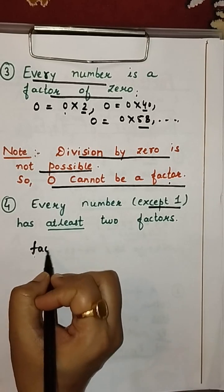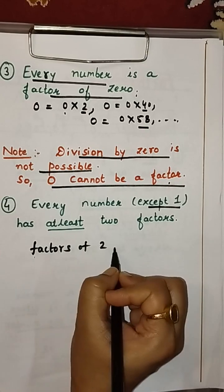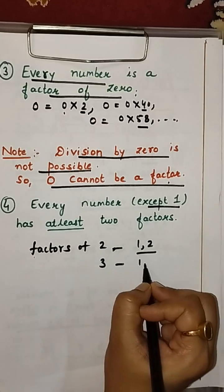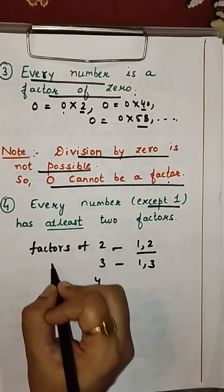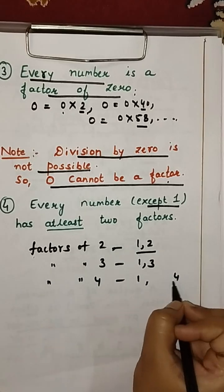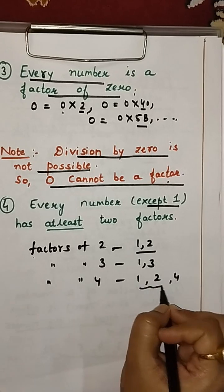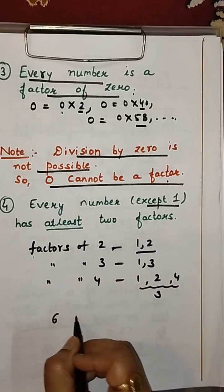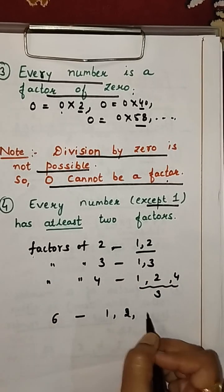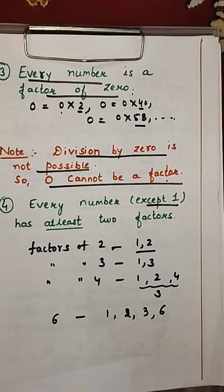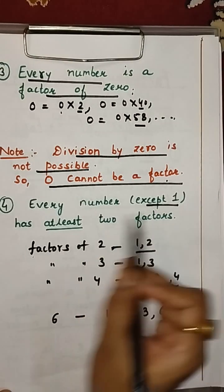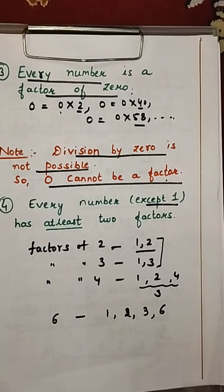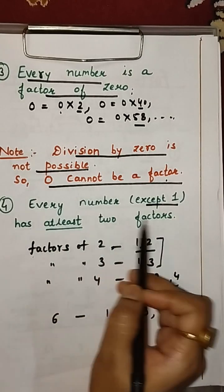For example, factors of 2 are 1 and 2 — exactly 2 factors. Factors of 3 are 1 and 3. Factors of 4 are 1, 2, and 4 — that is 3 factors. Factors of 6 are 1, 2, 3, and 6. So every number except 1 has at least 2 factors, and can have more. This is the fourth property.